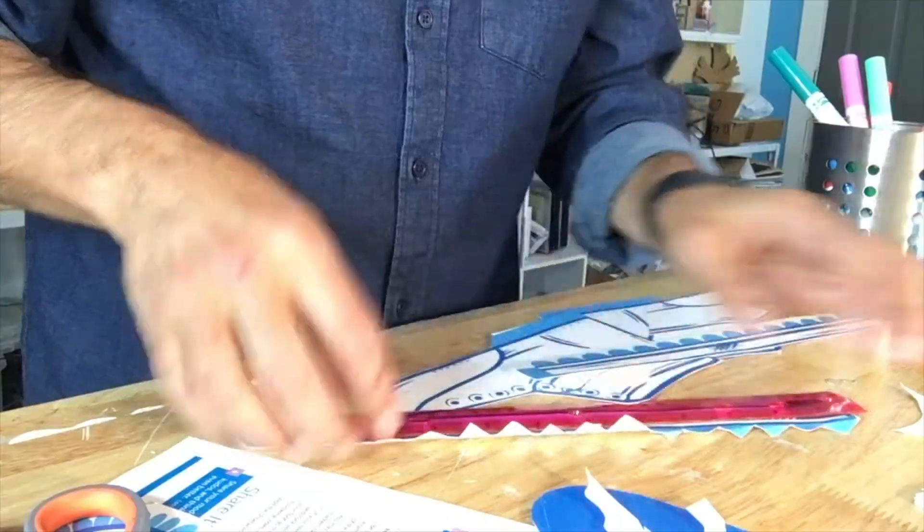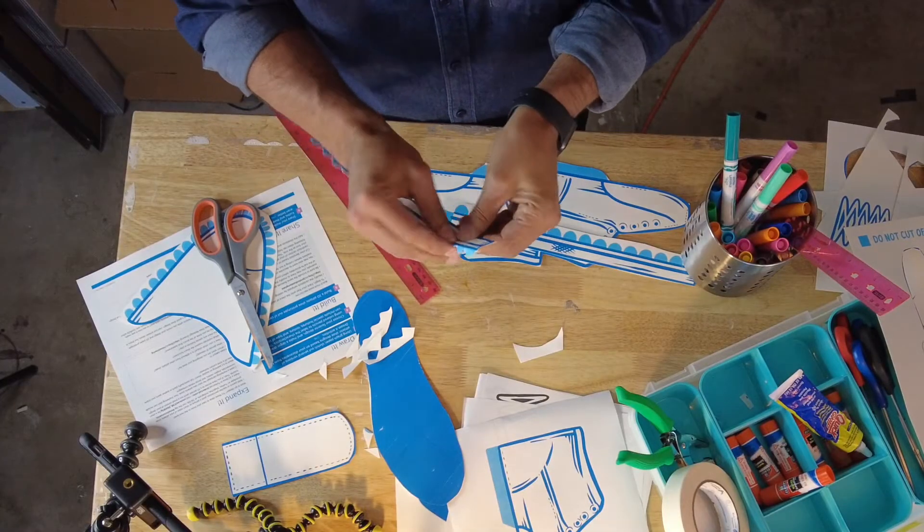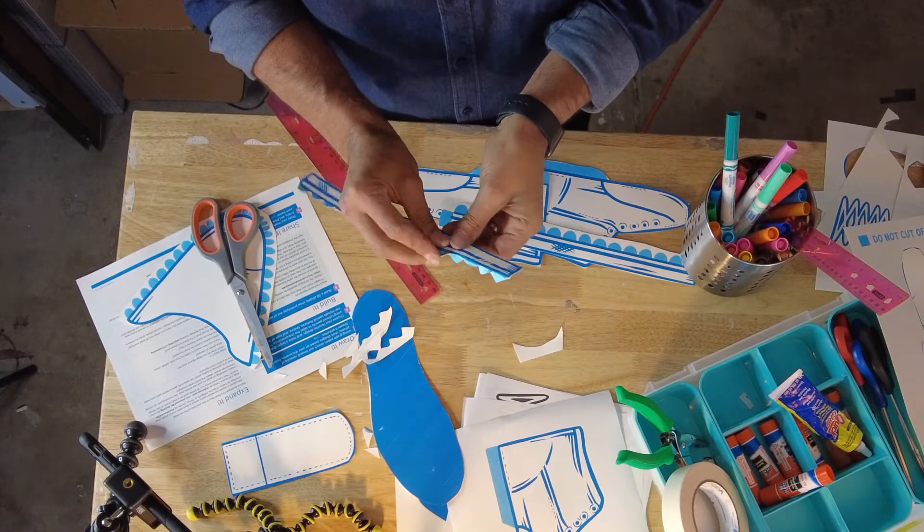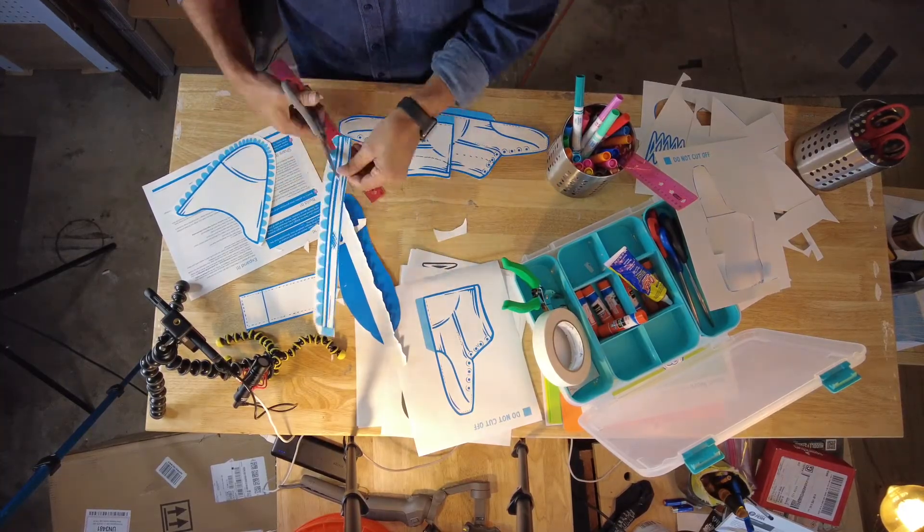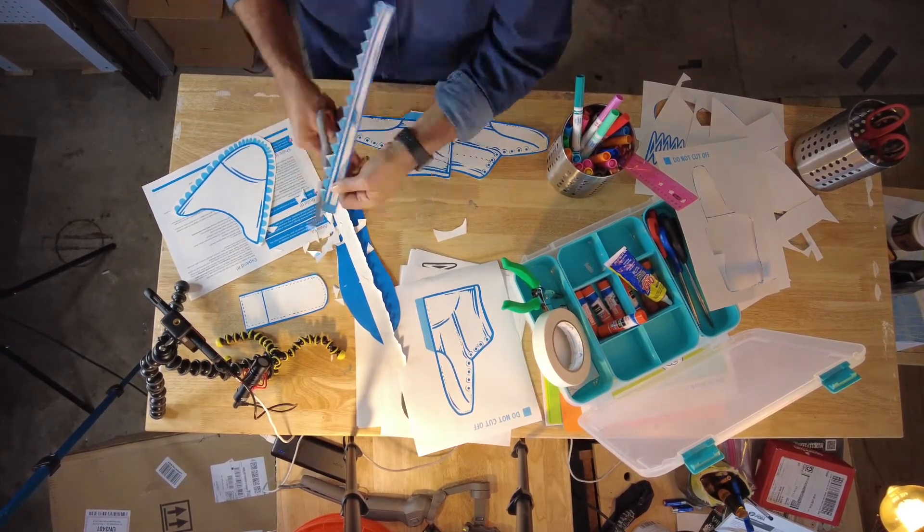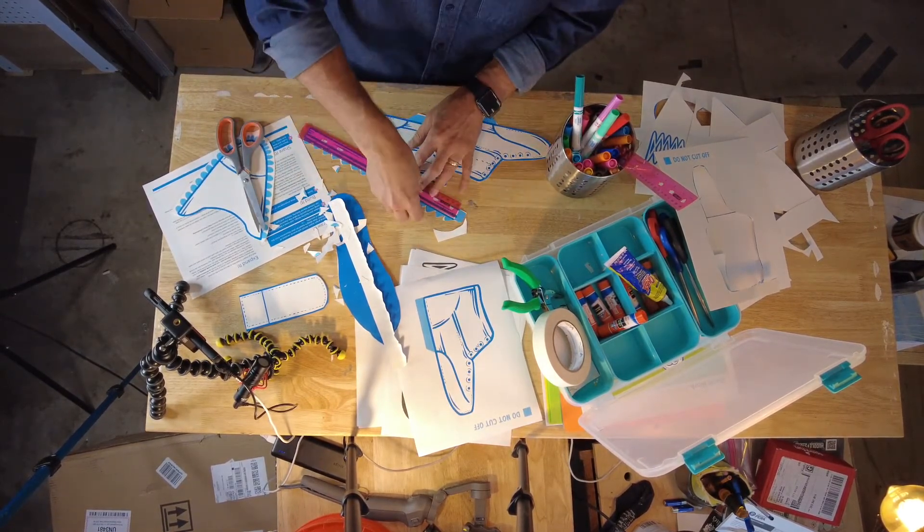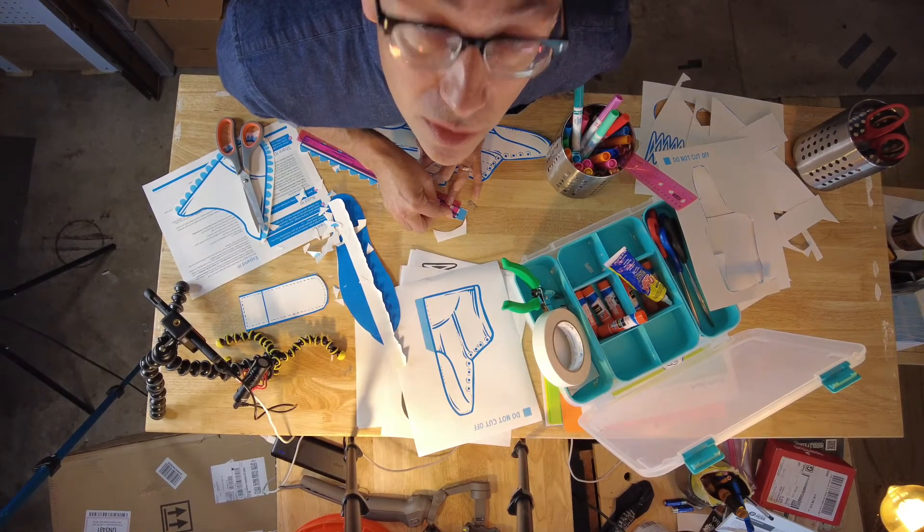Remember, bigger tabs are going to be better because you're then going to be able to kind of bend them over like this. Start to bend them over. You could probably do it on the side of a desk if you wanted to—that might be nice too.